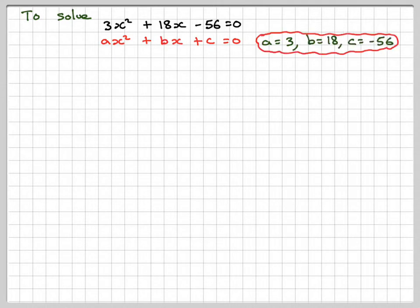Right. We were told to give our answer to 2 decimal places, so therefore that means we probably need to use the quadratic formula. So writing underneath ax² + bx + c = 0, the general form of a quadratic, we can say that a is 3, b is 18, and c is -56.